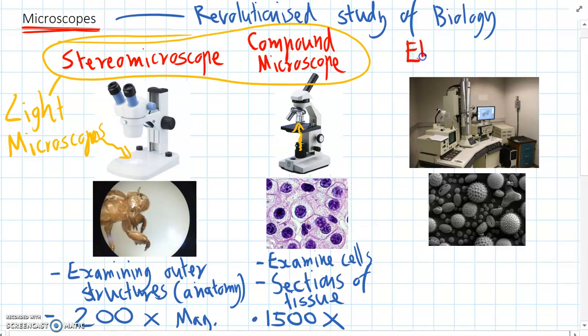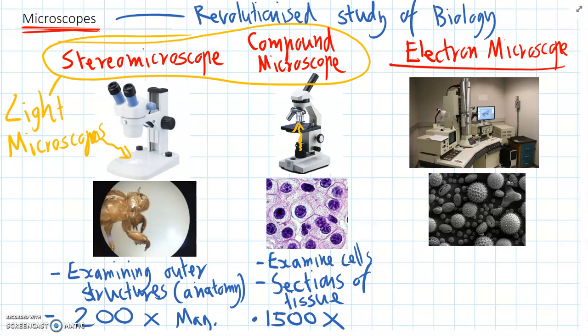And these are electron microscopes. So electron microscopes obviously from the name they use electrons and they fire them in towards the living thing or the tissue.